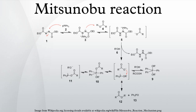Hughes et al. have found that the formation of the ion pair 5 is very fast. The formation of the oxyphosphonium intermediate 8 is slow and facilitated by the alkoxide. Therefore, the overall rate of reaction is controlled by carboxylate basicity and solvation.